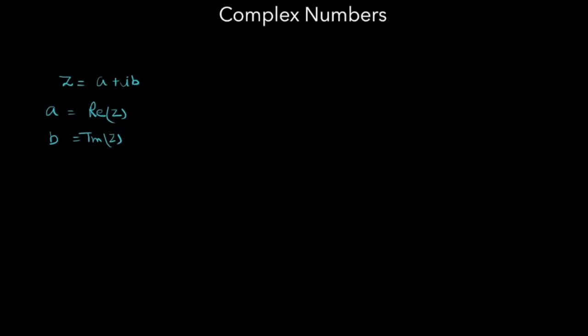For example, 5 plus 3 iota. The real part of this complex number is 5 and the imaginary part of this complex number is positive 3. i means iota.